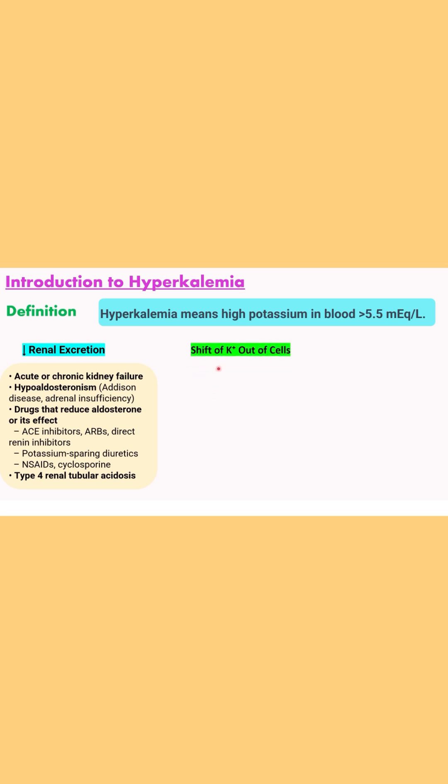Then the second important causes are shift of potassium out of the cells due to metabolic or respiratory acidosis. This is seen in insulin deficiency, that is in diabetic ketoacidosis, then beta adrenergic blockade, tissue catabolism or cell lysis due to tumor lysis syndrome or rhabdomyolysis or burns, hyperosmolarity and periodic hyperkalemic paralysis.